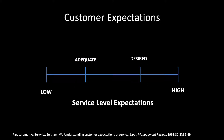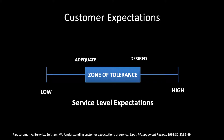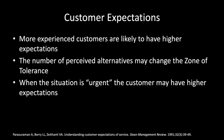Desired service is what the customer believes it can or should be, whereas adequate service is what the customer finds acceptable. In between, we have a zone of tolerance — as long as your service level falls above what is adequate and somewhere between adequate and that desired ideal service, that's where the customer thinks they met what I expected. More experienced customers are likely to have higher expectations, so that desired service level may creep up.